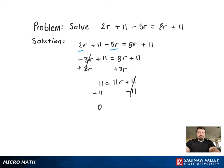Now we get 0 equals 11r, and then finally to get r by itself, just divide by 11, and as you can see, r equals 0.